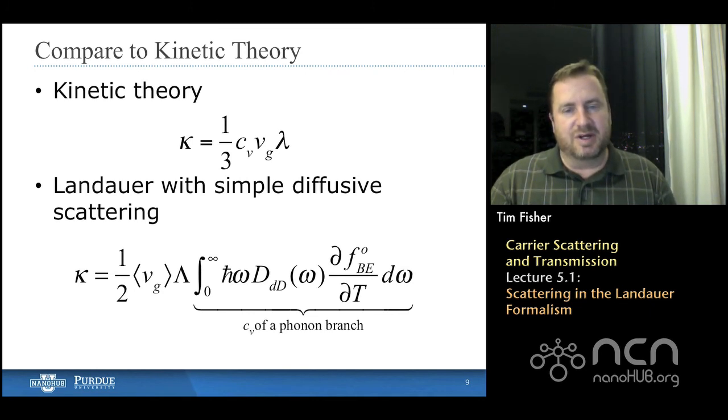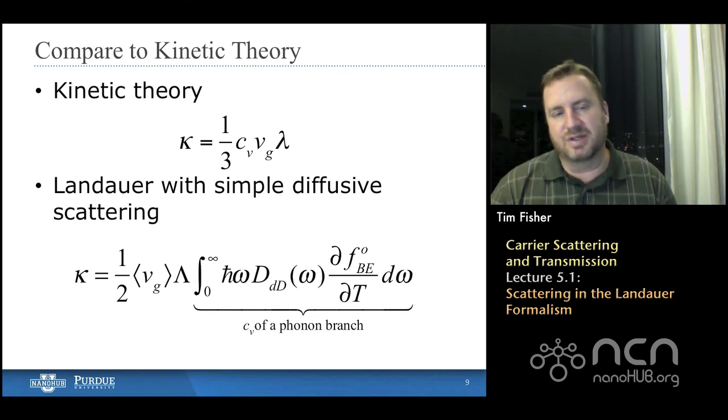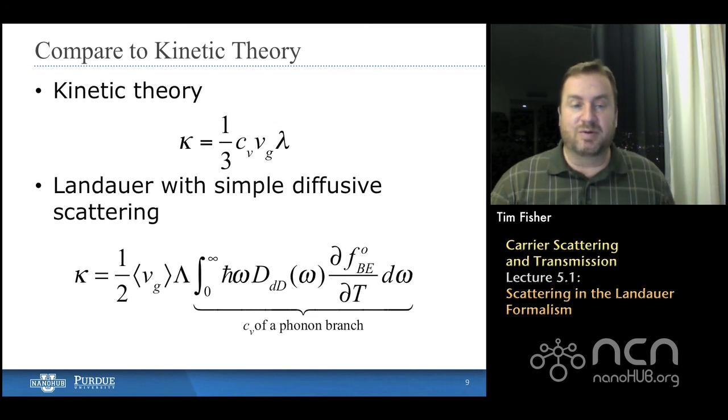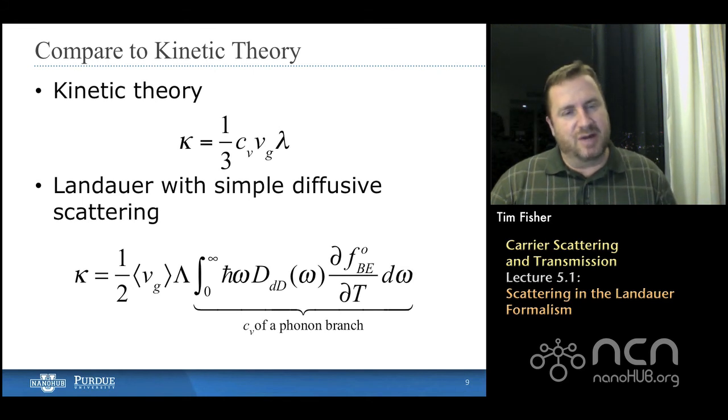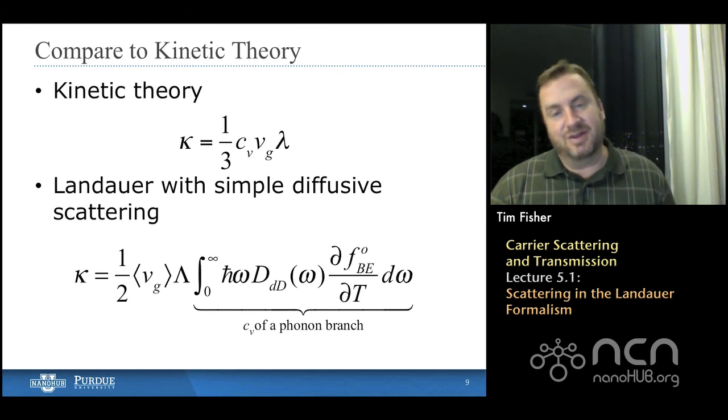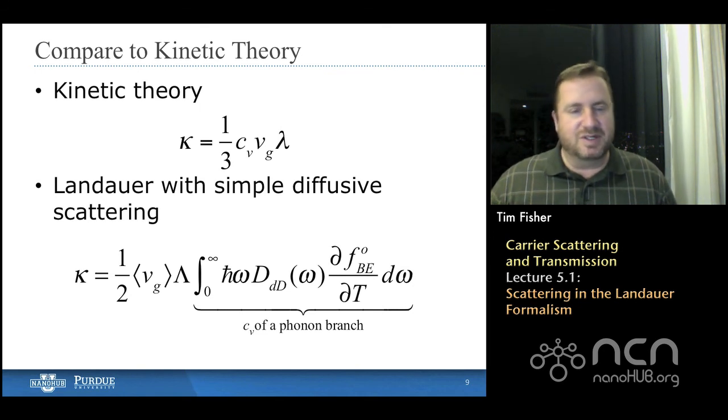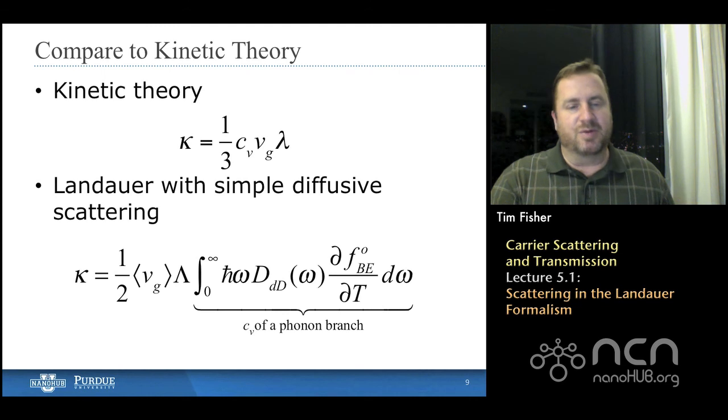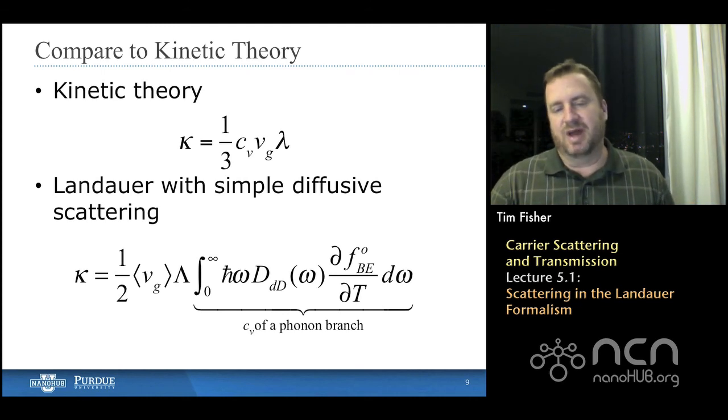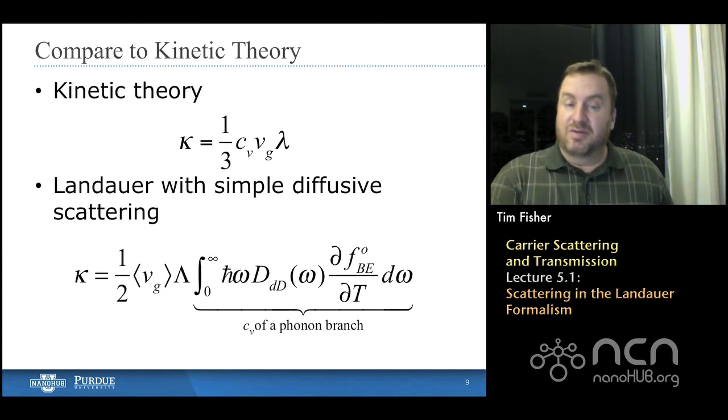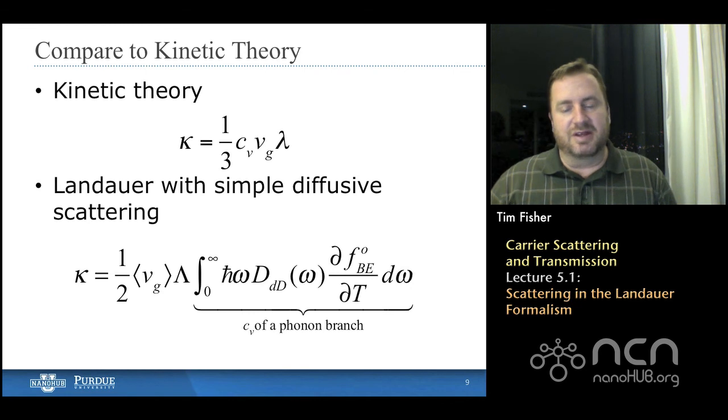The constants aren't exactly right because we didn't really make some geometric arguments in the Landauer approximation. Remember, we really just postulated a general form for the scattering term in that case. And we didn't worry so much about the geometry. Whereas when we did kinetic theory, we were looking at the distance of the mean free path in the direction of interest. So there's a few differences, but certainly this general concept of thermal conductivity being expressible as a product of velocity, mean free path, and specific heat, holds up from Landauer theory as it did for kinetic theory.